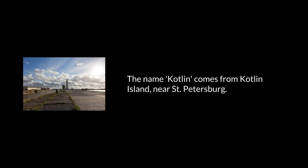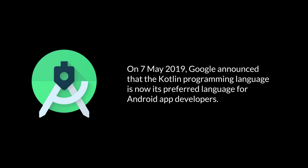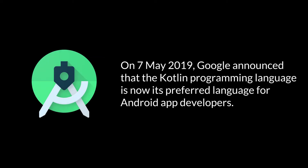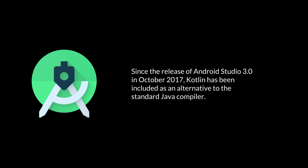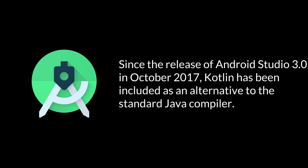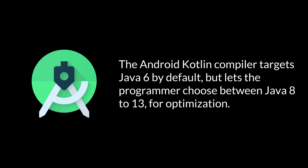The name Kotlin comes from Kotlin Island, near St. Petersburg. On 7 May 2019, Google announced that the Kotlin programming language is now its preferred language for Android app developers. Since the release of Android Studio 3.0 in October 2017, Kotlin has been included as an alternative to the standard Java compiler. The Android Kotlin compiler targets Java 6 by default, but lets the programmer choose between Java 8 to 13 for optimization.